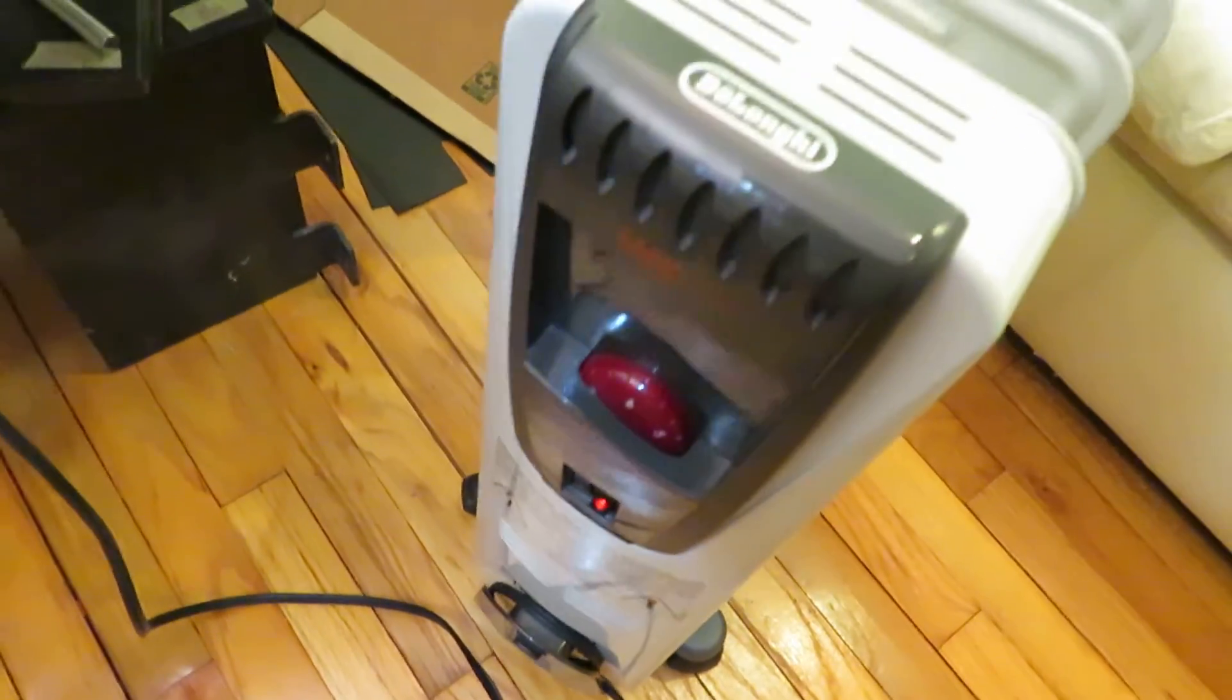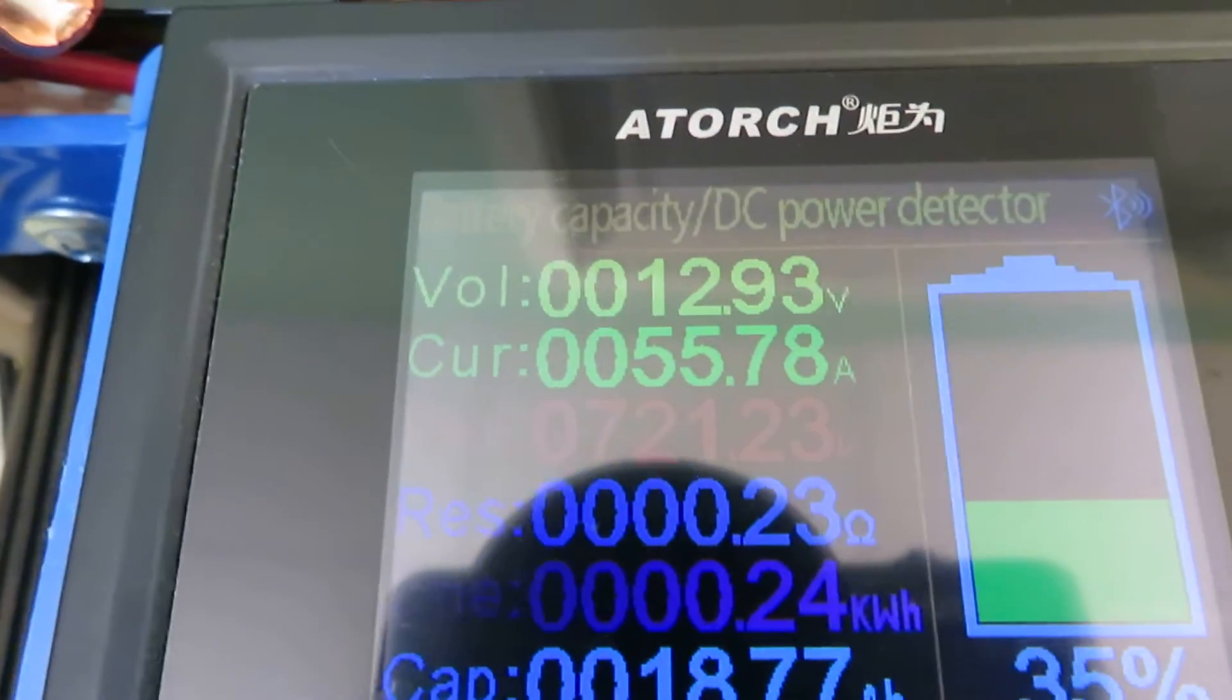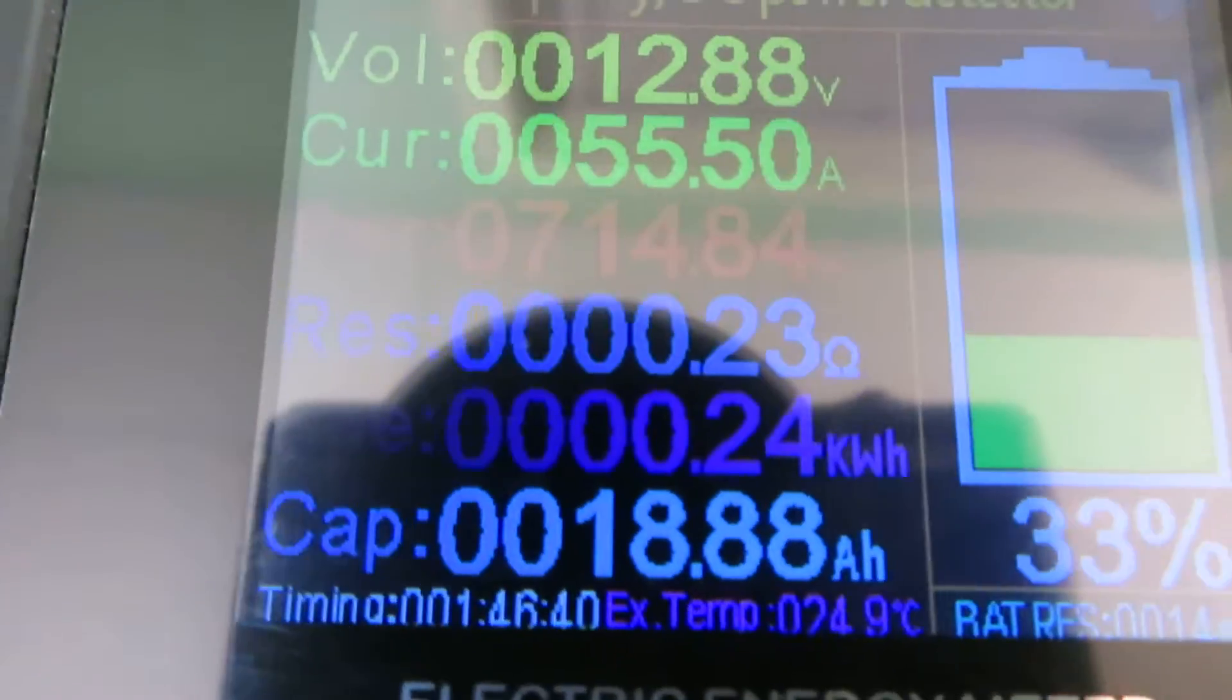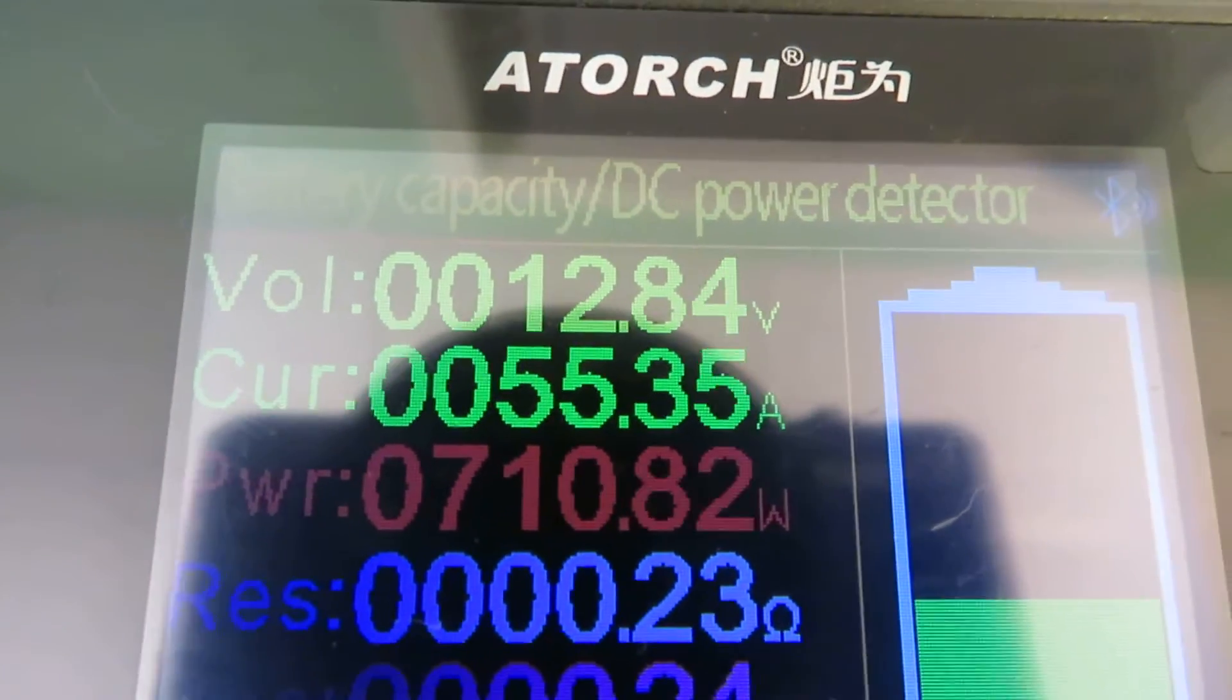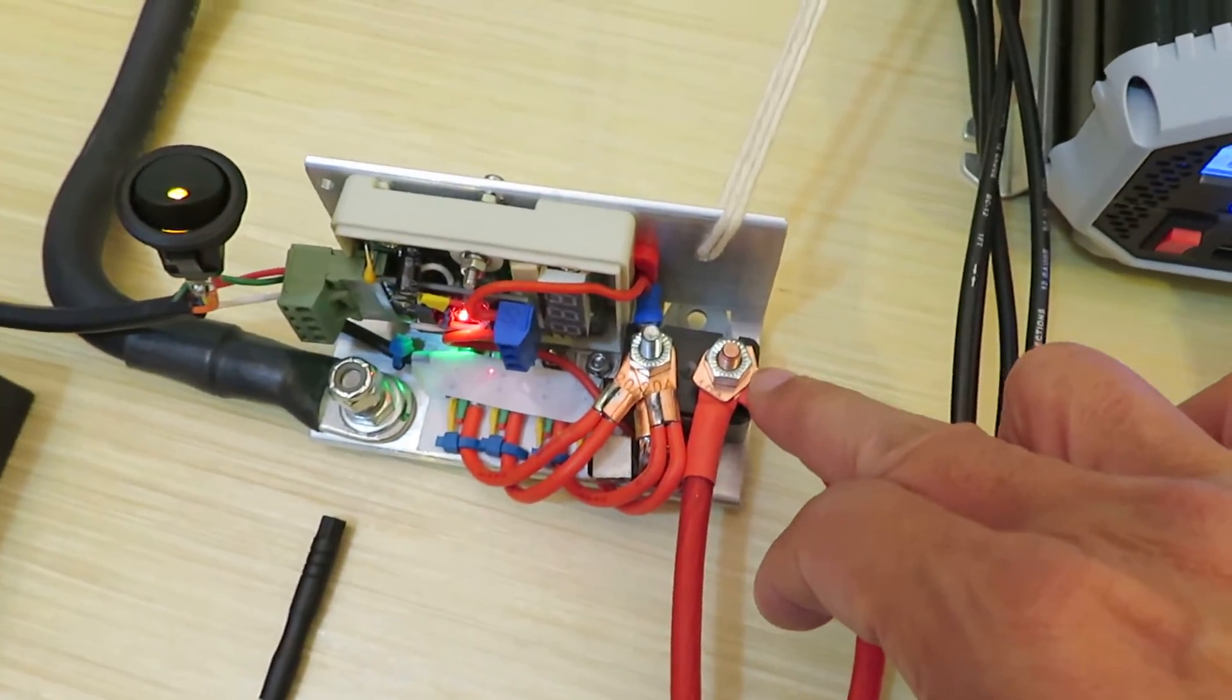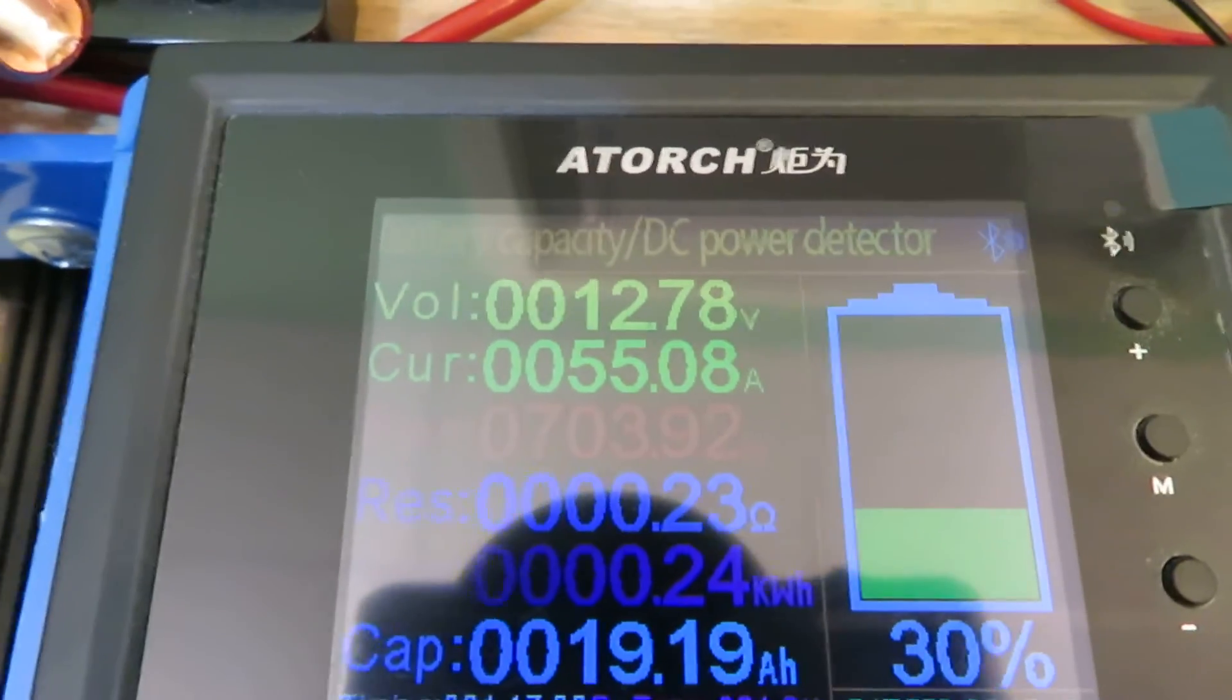So the heater comes on and the current is now 55.7 amps. And the wattage is about 700 watts, 711 watts. So even though the circuit breaker is only for 50 amps, and now it's drawing higher than 50 amps, it's 55 amps.